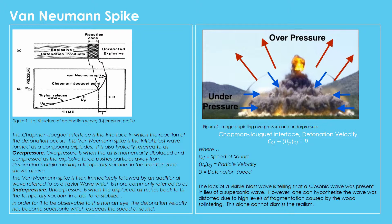An explosion consists of two parts: the Van Neumann Spike, commonly referred to as overpressure, and the Teller-Release Wave, commonly referred to as underpressure. Overpressure is where the energy from an explosion causes the displacement of any free-floating particles in the air to form an expanding sphere. According to the Chapman-Jouguet interface, the blast wave can only be seen if the detonation velocity is above supersonic speeds, since the speed of sound is in the detonation velocity equation.